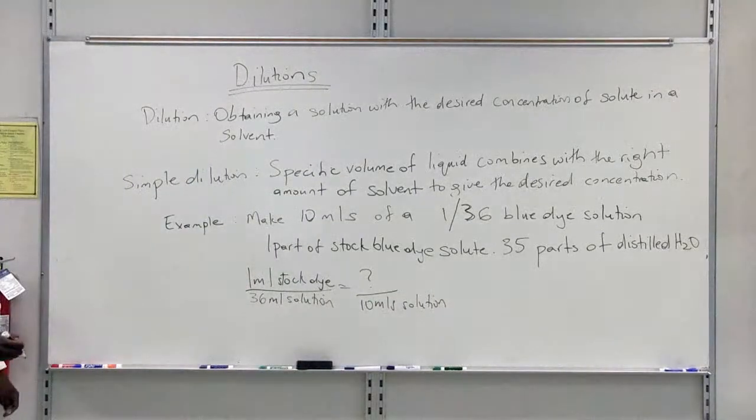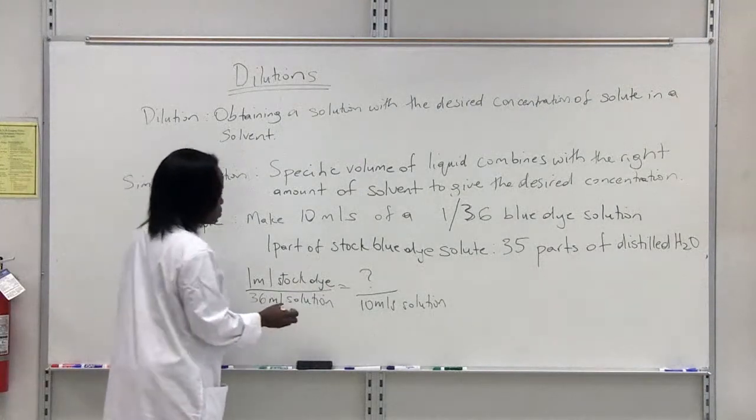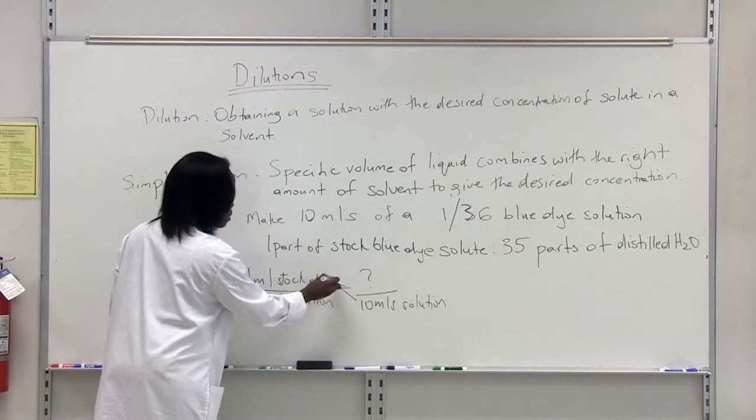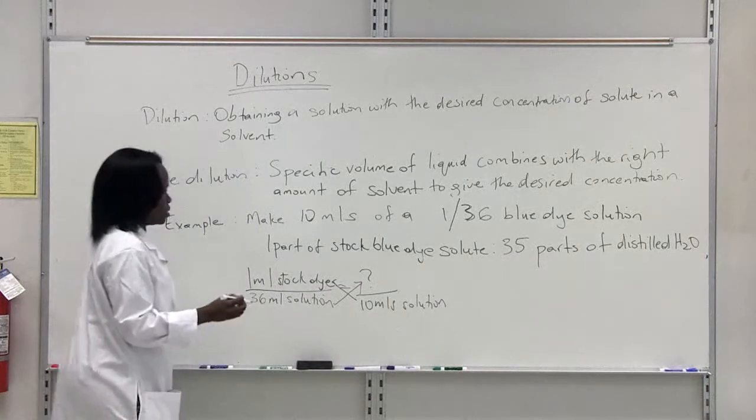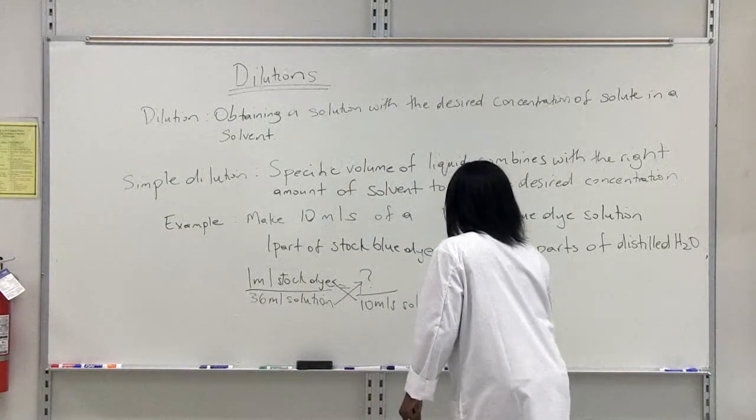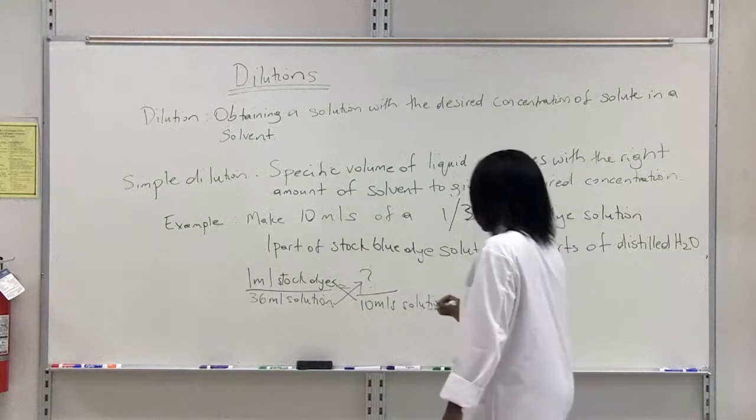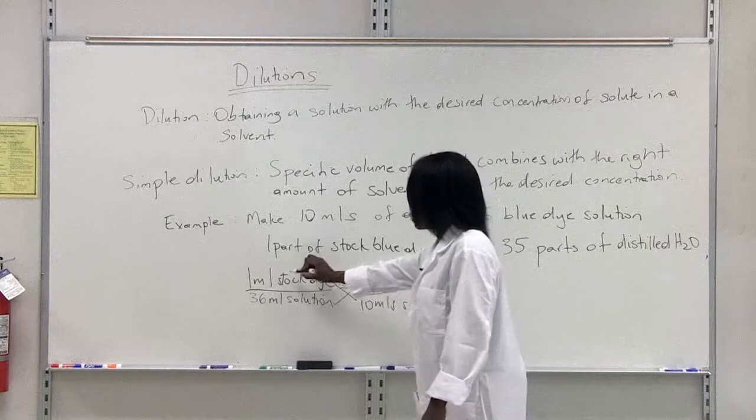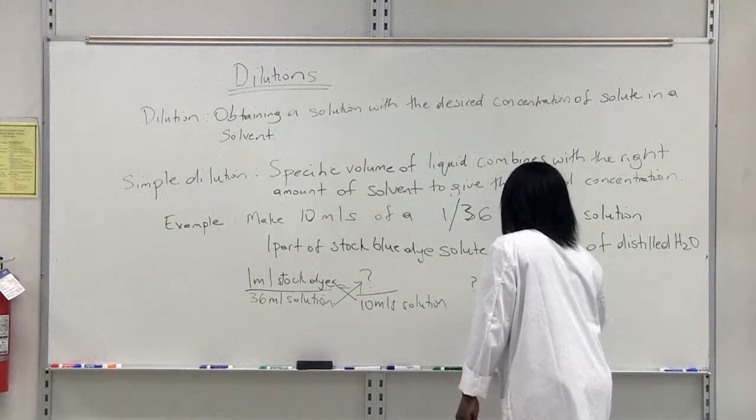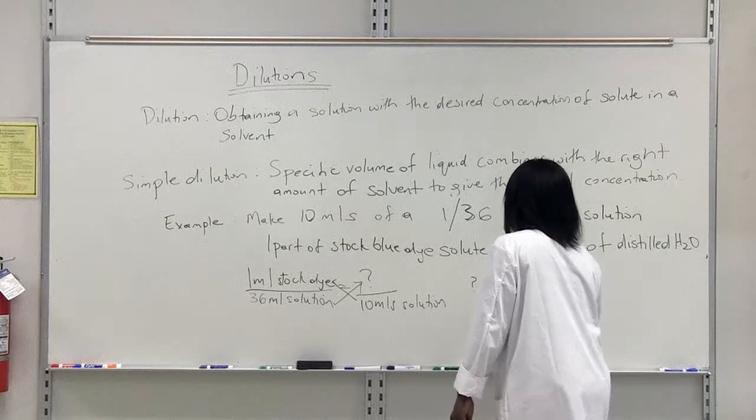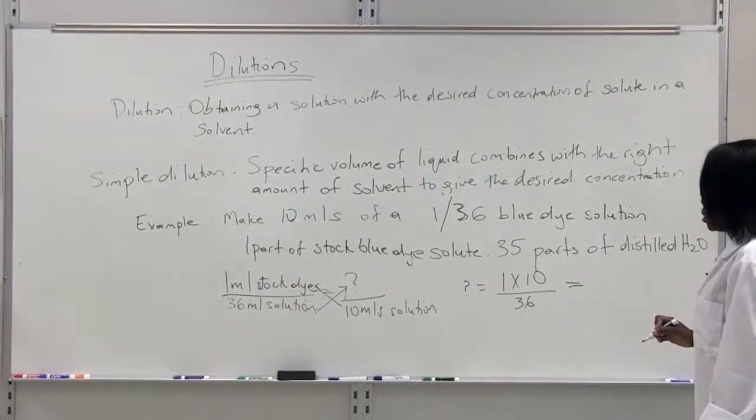From your class, you probably know how to work out this particular problem. What you would do is what is called cross multiplication. You arrange your equation so that your question mark is on one side. In that case, you're going to multiply your 10 mils by your 1 mil of stock dye. What you would have here is 1 times 10 divided by 36.